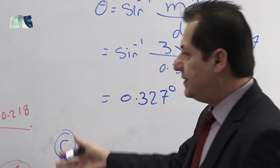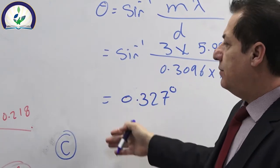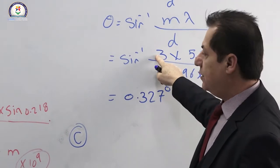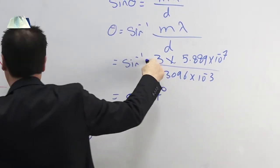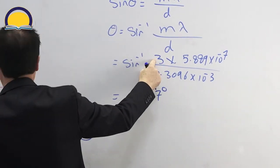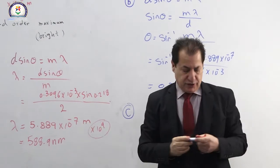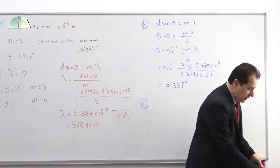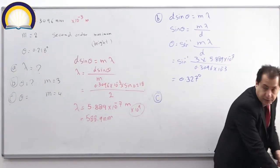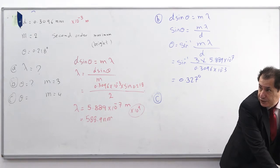For part C, it is the same calculation as part B but using m = 4 for the fourth-order maximum. You can try this at home whenever you have time.